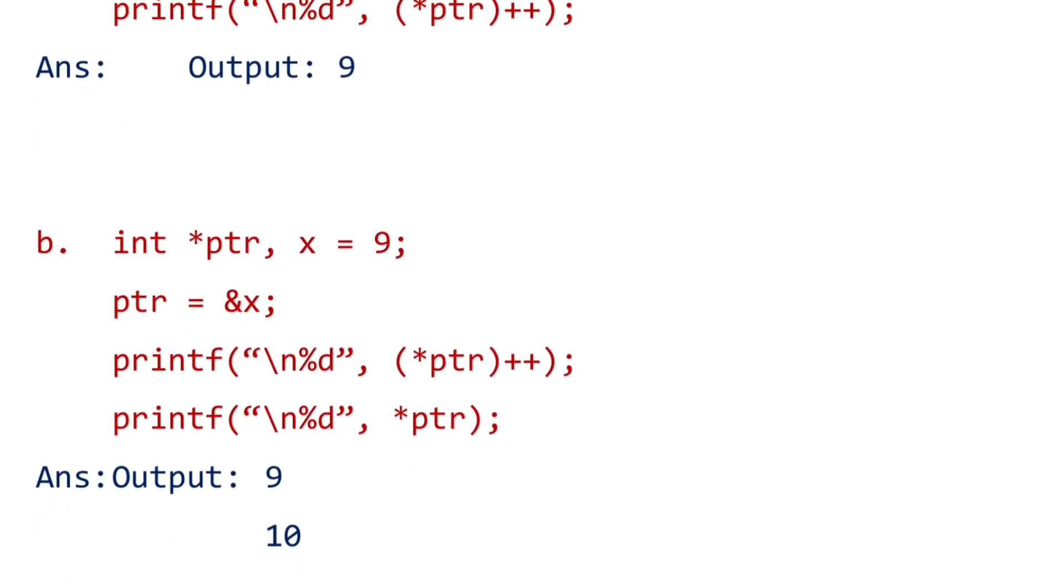Next, the printf statement is two times. Once in the third line ptr plus plus is given, and in the fourth line there is no plus. When we execute this program, first we will get the value of x. After that, when it gets the increment operator, the value of x will be increased by one, so it will be 10. In the next line we will get the value of pointer as 10.